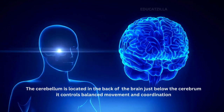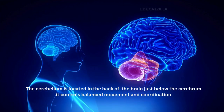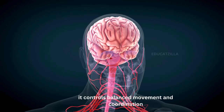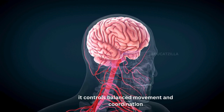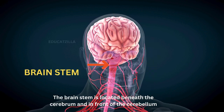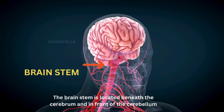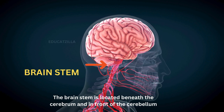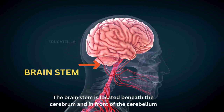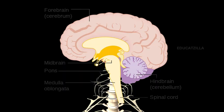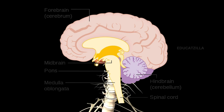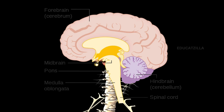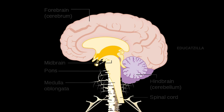The cerebellum is located in the back of the brain, just below the cerebrum, and controls balance, movement, and coordination. The brain stem is located beneath the cerebrum and in front of the cerebellum. It connects the brain with the spinal cord and is composed of the midbrain, pons, and medulla oblongata.